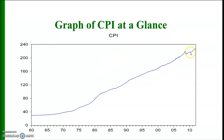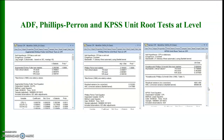They can be made stationary by different ways, and one of the ways is to take the first difference. First I will compare the results of the Augmented Dickey-Fuller test, Phillips-Perron test, and KPSS test using the consumer price index series at level, and then I'll show how to make it stationary. In this slide we have three different windows.